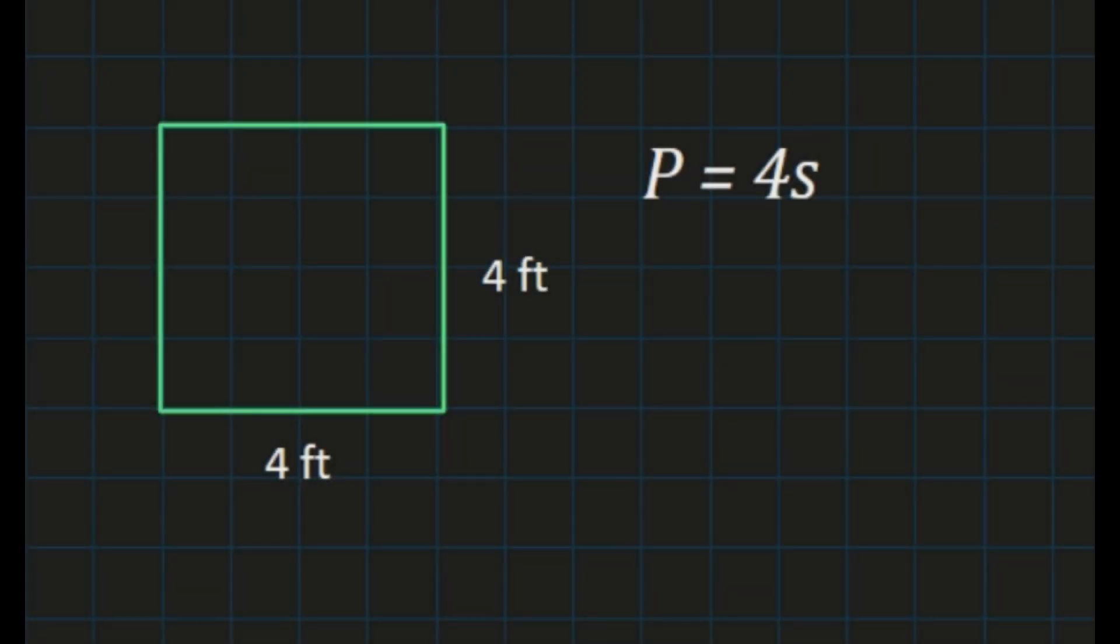In this example, we have a square with side lengths of 4 feet, and we're going to use our formula, perimeter equals 4 times s, to find the perimeter of our square.